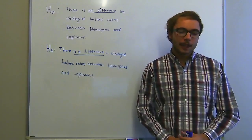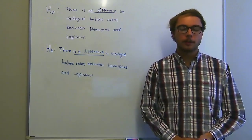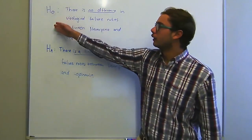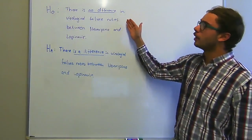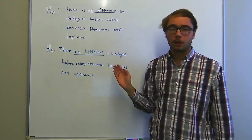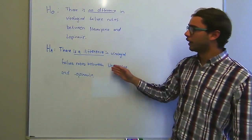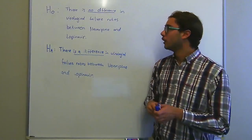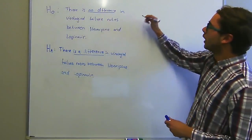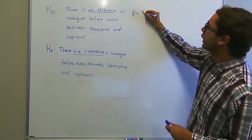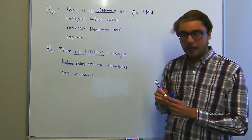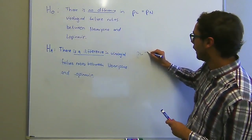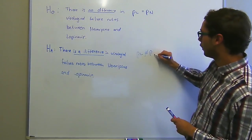Question B says: state appropriate hypotheses to test for independence of treatment and virologic failure. The null hypothesis says there is no difference in virological failure rates between Nevirapine and Lopinavir, mathematically: H₀: P_L = P_N. The alternative hypothesis says there is a difference in virological failure rates between Nevirapine and Lopinavir, mathematically: H_A: P_L ≠ P_N.